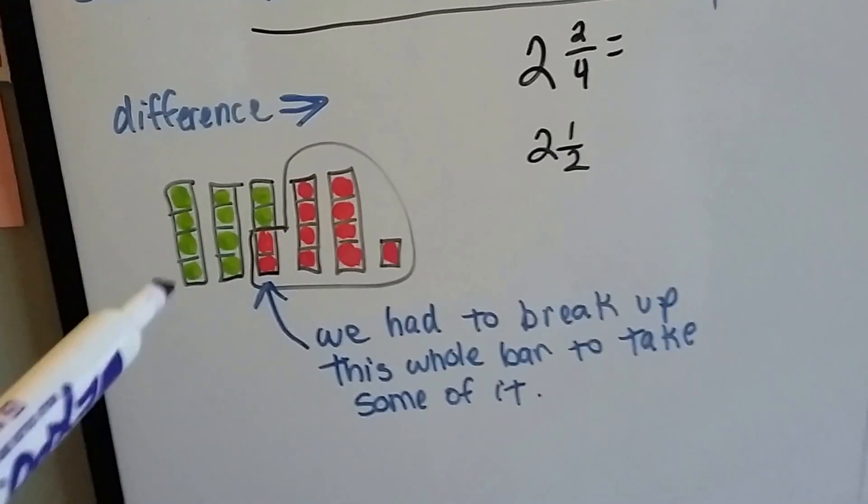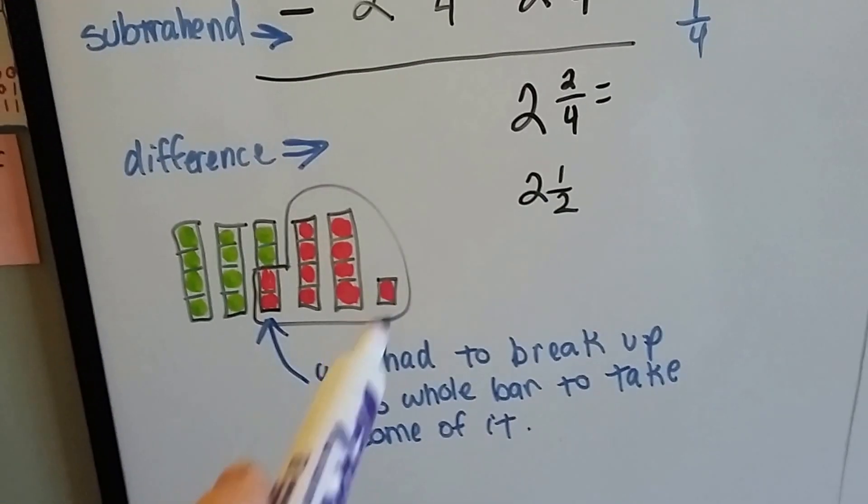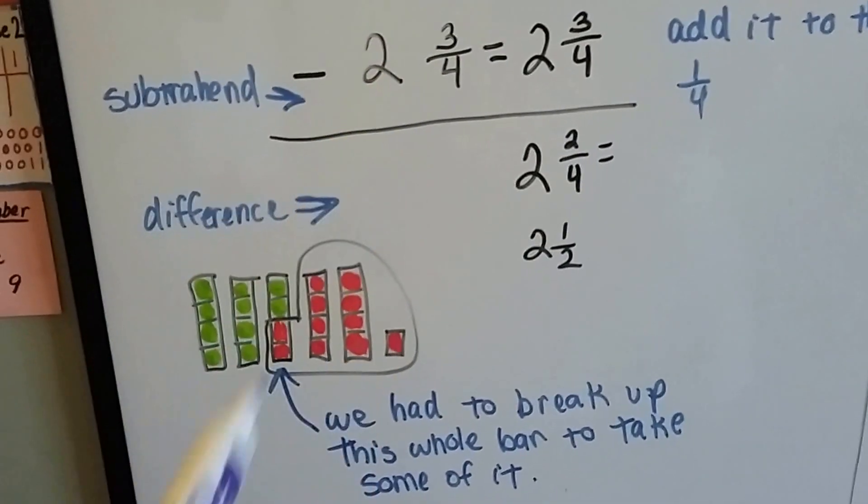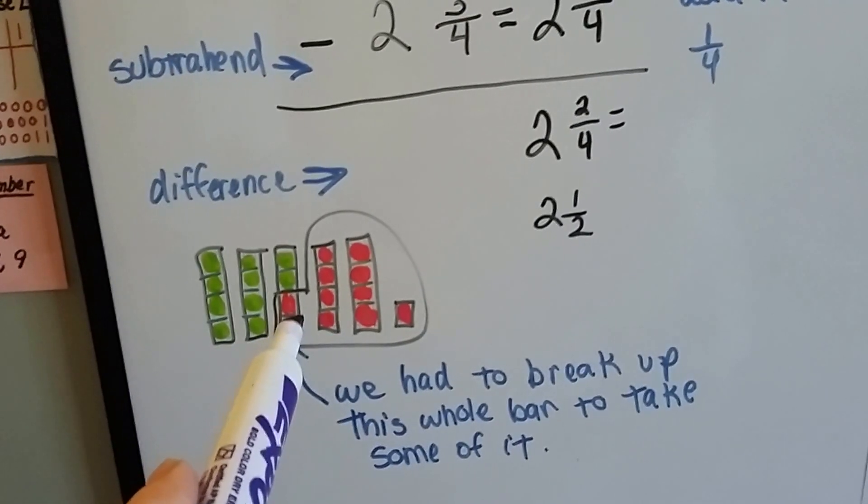So what's happening is we had 5 and 1 fourth. Here's our 5 bars and 1 fourth bar, and we needed to take away 2 and 3 fourths, and the only way to do it was by cutting into one of the other whole bars.